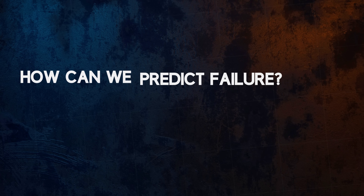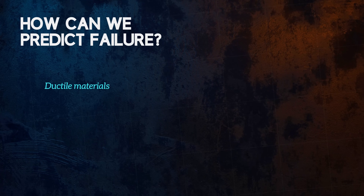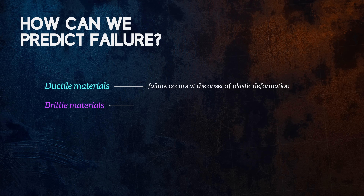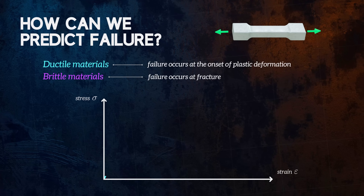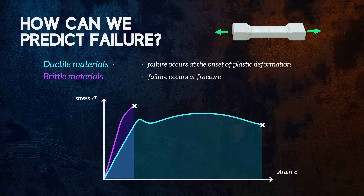First, we need to define what failure is. For ductile materials, failure is usually considered to occur at the onset of plastic deformation, and for brittle materials it occurs at fracture. These points are easy to define for a uniaxial stress state, like a tensile test. They occur when the normal stress reaches the yield strength for ductile materials, and the ultimate strength for brittle materials.